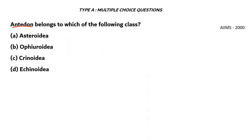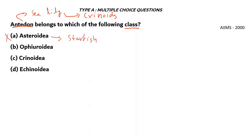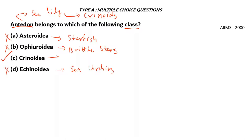Next question. Antedon belongs to which class of echinodermata? The common name of Antedon is sea lily, and it is a form of echinodermata known as crinoids. Asteroidea contains starfish — incorrect. Ophiuroidea contains brittle stars — incorrect. Option D, Echinoidea, contains sea urchins — incorrect. The right answer is option C, Crinoidea, which contains crinoids such as the sea lily and feather star.